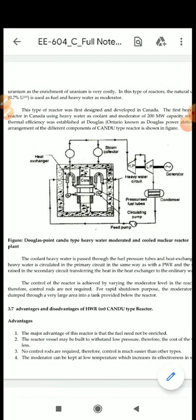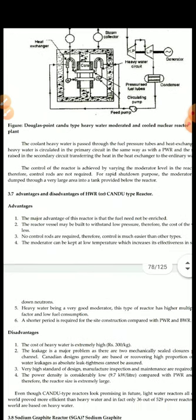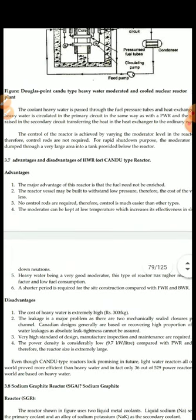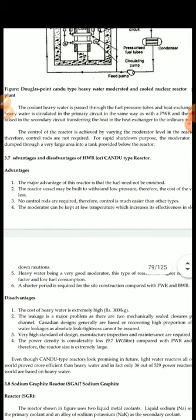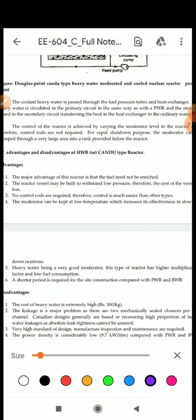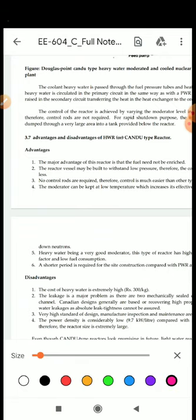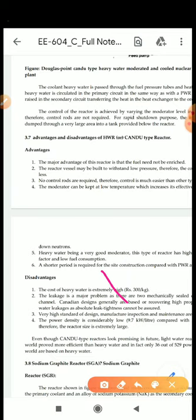So this CANDU reactor is a heavy water reactor. Let's see some advantages and disadvantages of this reactor. The advantages are: the major advantage is that the fuel need not be enriched. The reactor vessel may be built to withstand low pressure, therefore the cost of vessel is less. No control rods are required, therefore control is much easier than other types of reactors. As compared to boiling water reactor, the moderator can be kept at low temperature which increases its effectiveness in slowing down the neutron speed. The heavy water being a very good moderator, this type of reactor has high multiplication factor and low fuel consumption.